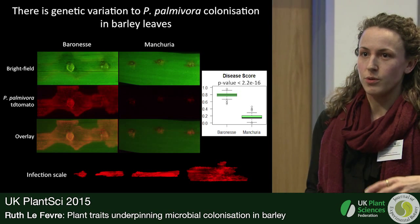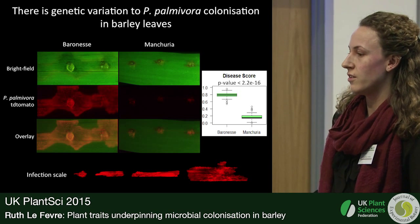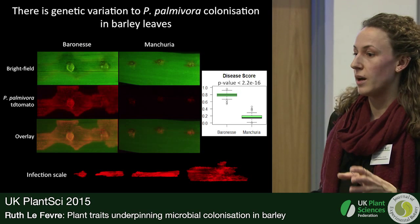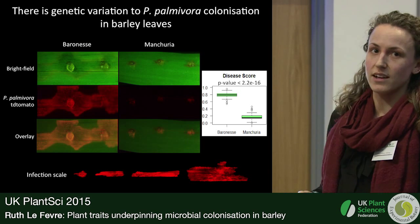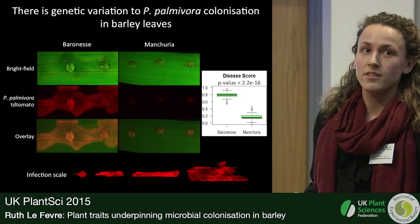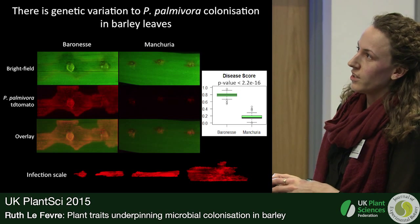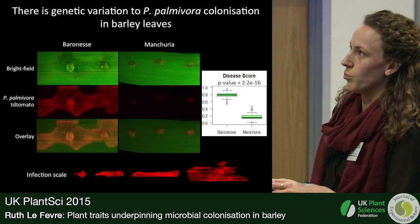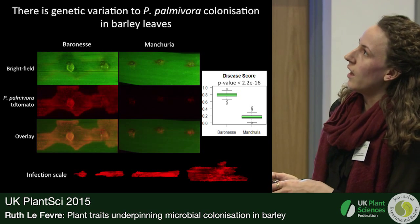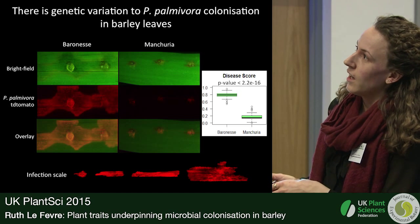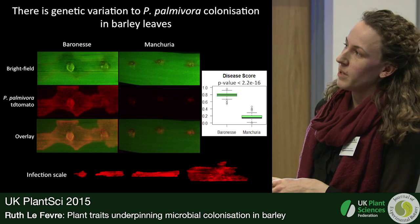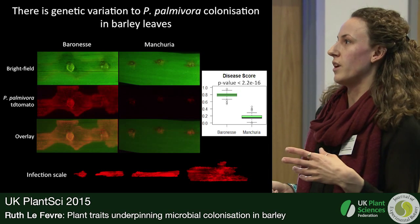In order to use this as a tool to probe for plant traits that affect microbial colonisation, we wanted to see whether it infects barley and whether there's genetic variation in colonisation of this pathogen in barley tissue. We developed a leaf assay using detached leaves — we inoculate the leaves in different spots, leave it for three days, and then use a fluorescence microscope to see the colonisation extent. We identified a really susceptible variety called Baroness and a really resistant variety called Manchuria, and we've come up with an infection scale to quantify the amount of colonisation.